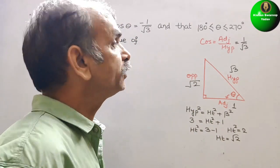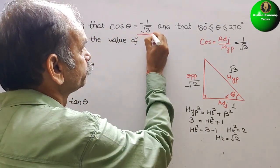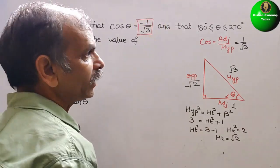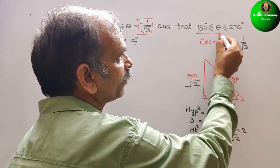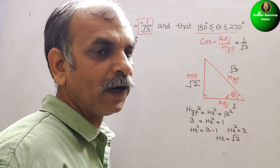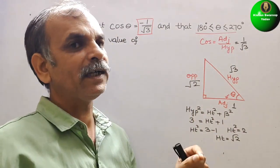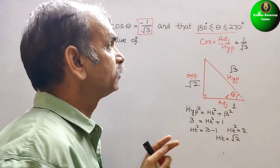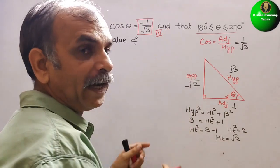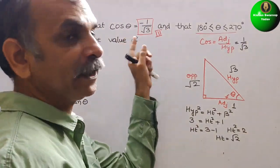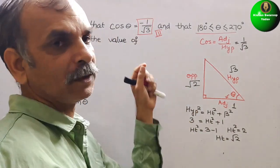Now if you see, they have given the value in negative. You can see that they have given the quadrant 180 degrees to 270 degrees, which lies in the third quadrant. And in the third quadrant, cos theta is negative. That's why we have written minus 1 by root 3.